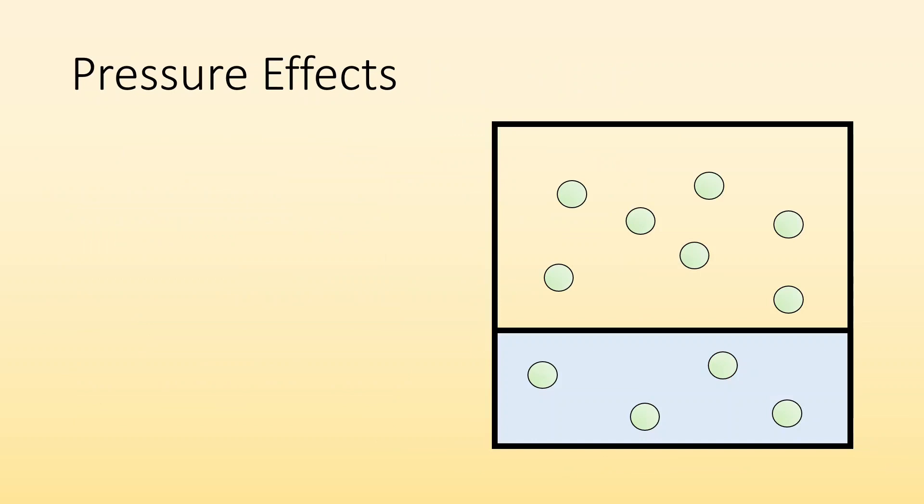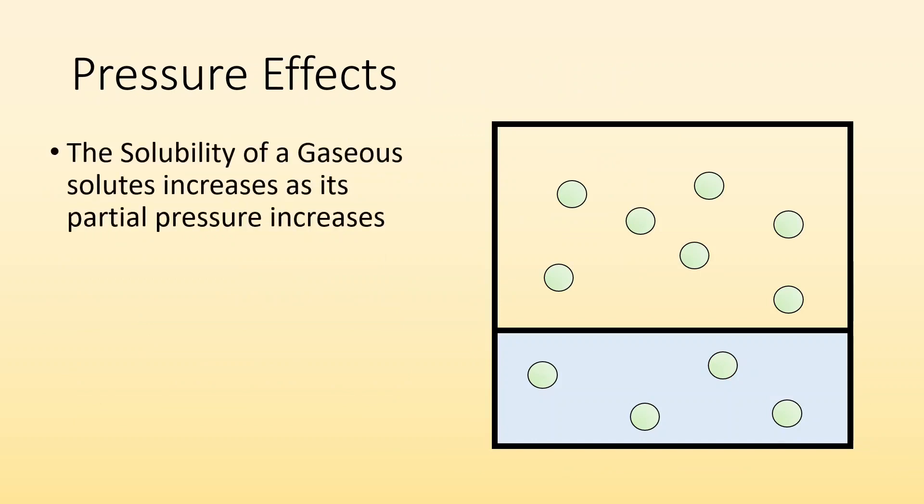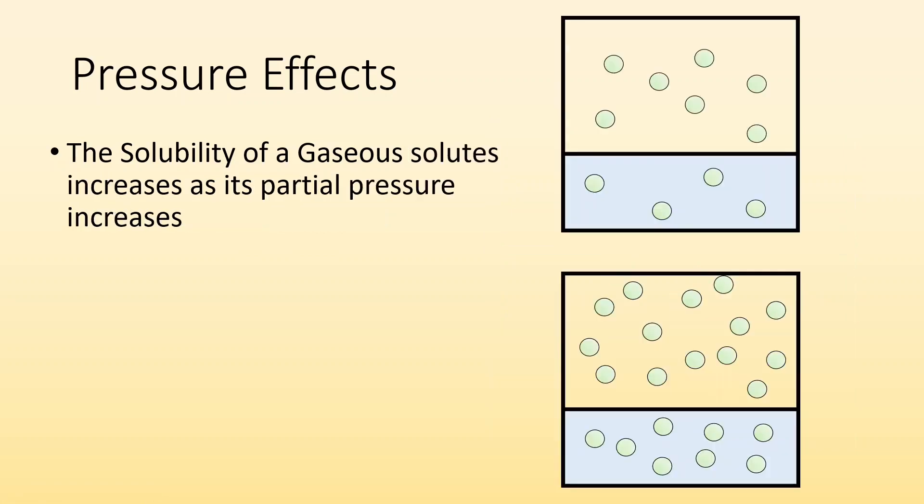Pressure effects. The solubility of gaseous solutes increases as its partial pressure increases. We have this equilibrium - gaseous particles being dissolved but also leaving to become gas, but we also have some gas particles re-dissolving. We got this equilibrium, and what's going to happen if we increase the pressure? It's like we're forcing more of those gas particles to interact with the liquid, which means more of it's going to dissolve.